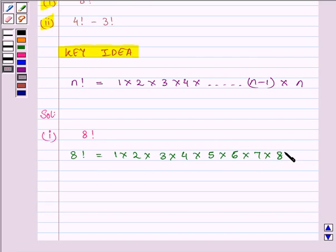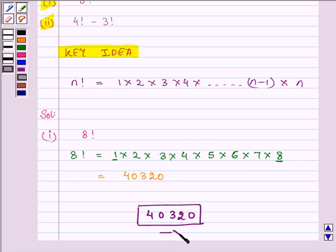Multiplying all natural numbers from 1 to 8 gives us 8 factorial, and the answer is 40,320. This is our required answer to the first part.